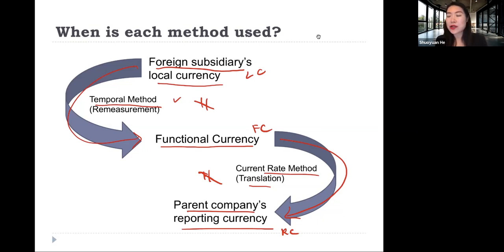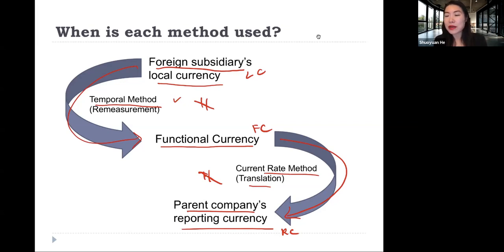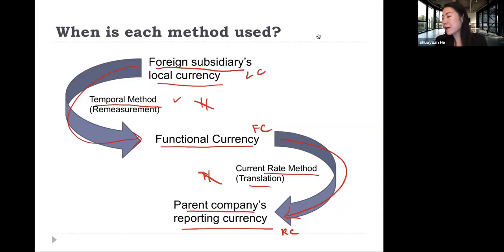Those are the three situations. However, our book only covers the first two situations and doesn't present the methods this way. You should keep in mind that there is a third situation — where the functional currency is neither the foreign subsidiary's local currency nor the parent firm's reporting currency — and in that case we need to use both methods. It's not mentioned in the book, but it does happen in practice.